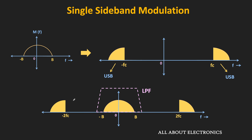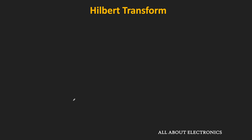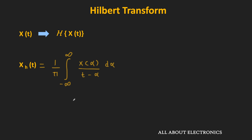So first, let us talk about the Hilbert transform. If x(t) is some signal, then its Hilbert transform x̂ (also written as Xh) can be given by: (1/π) times the integral from −∞ to +∞ of x(α) divided by (t − α) dα. If you closely observe, this is actually a convolution of the signal x(t) and 1/(πt).